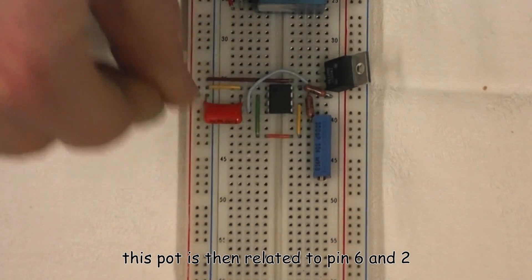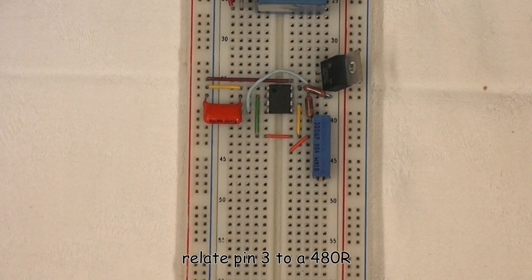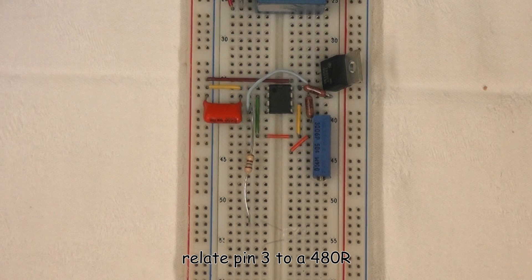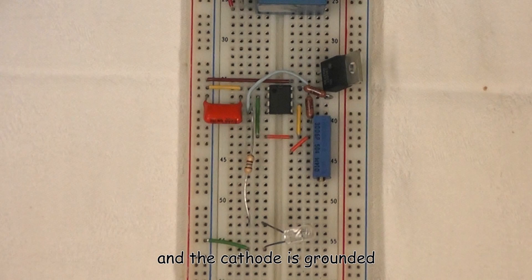This pot is then related to pin 6 and 2. Relate pin 3 to a 180 ohm resistor. The infrared LED's anode is connected to the resistor and the cathode is grounded.